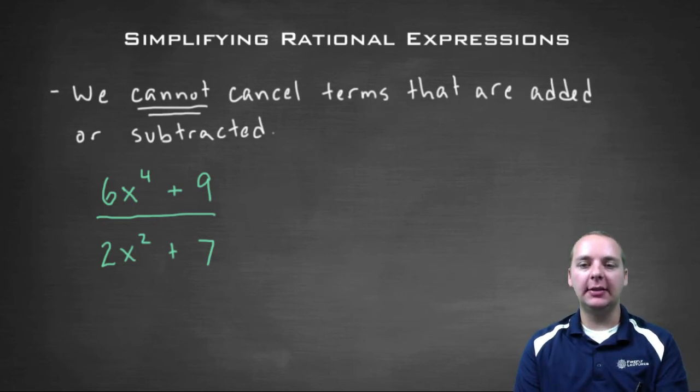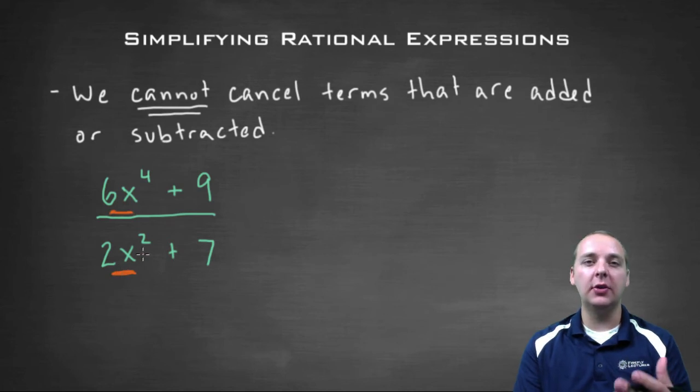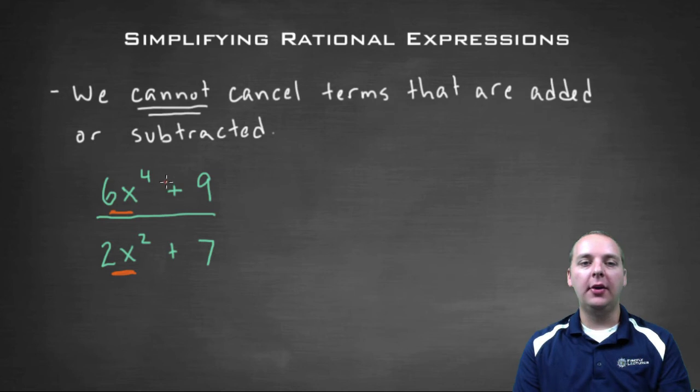With something like this, students would be inclined sometimes to look at the six x to the fourth and the two x squared and say, oh, it looks like those guys can be simplified or reduced. The problem is that these guys are not factors of the numerator and denominator. They're being added to other terms.